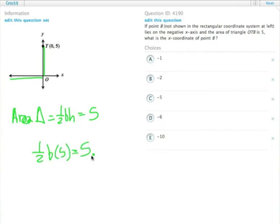We multiply both sides times 2. 5B equals 10. B equals 2.